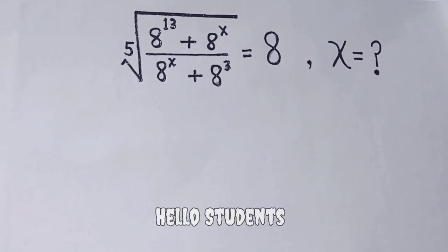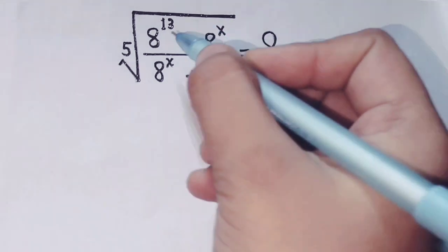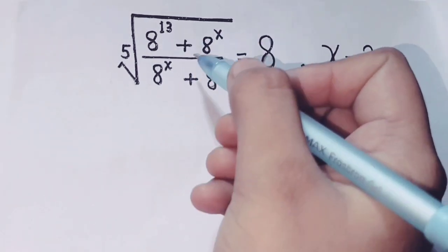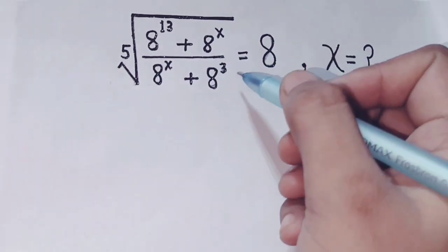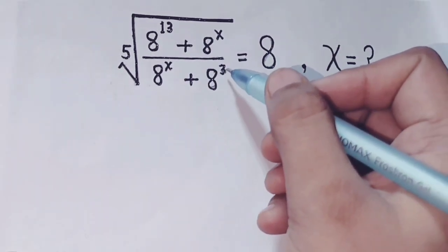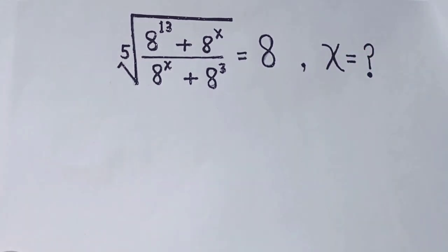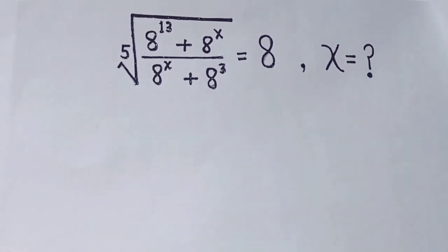Hello students. Today in this video we are going to discuss this question: fifth root of (8 power 13 plus 8 power x) over (8 power x plus 8 power 3) equals 8. Find the value of x.